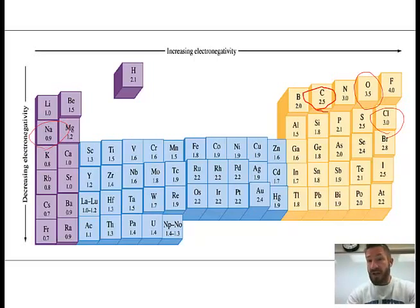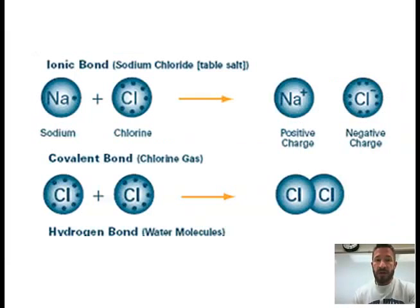Now also you could have two oxygens together. So the difference in 3.5 and 3.5 is zero. So it's no difference in electronegativity, so that's definitely covalent. And also what I'm going to talk about, the formation. This goes with the formation part.